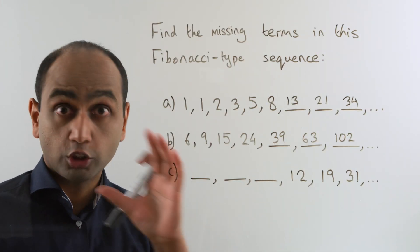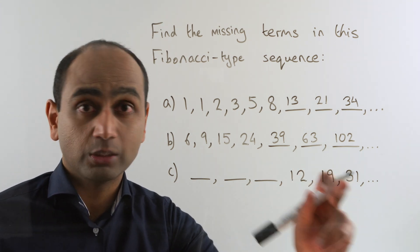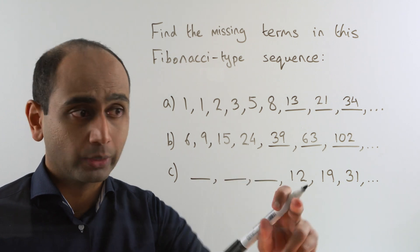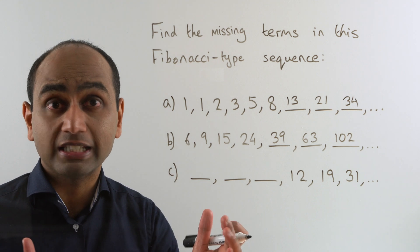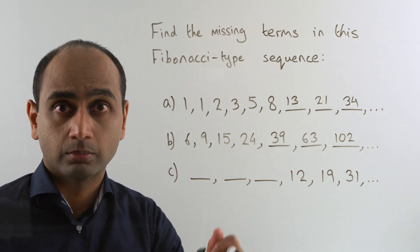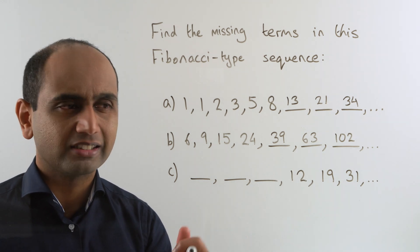Right here we go. Notice first of all that this fits in with what we know already. That number 31 has to be what we get when we add 12 and 19 together. And if you just test it out, 12 plus 19, you'll see that it is 31. Okay let's think about the 19. How do we get 19 in this sequence?